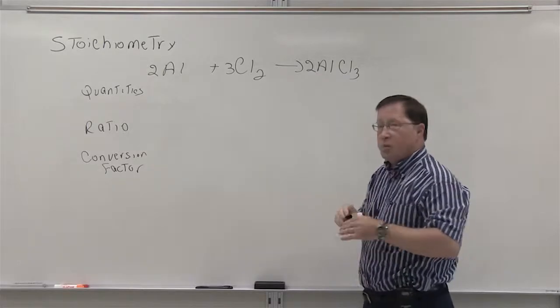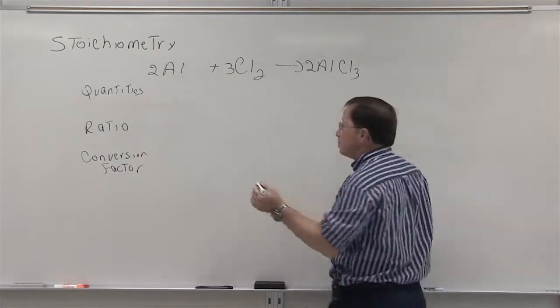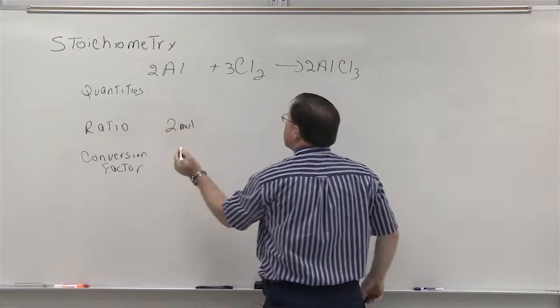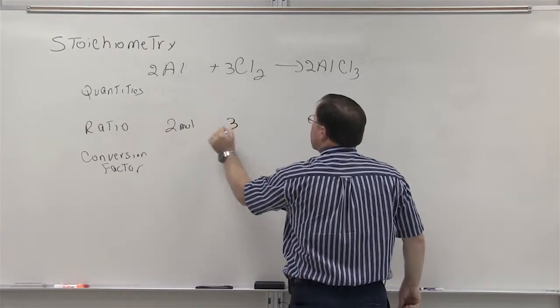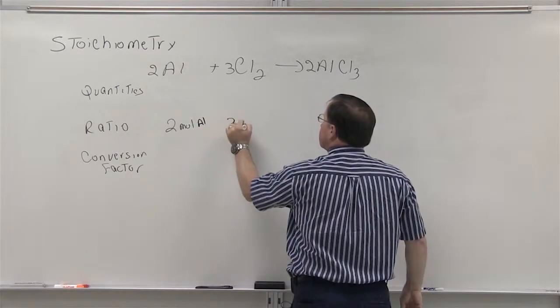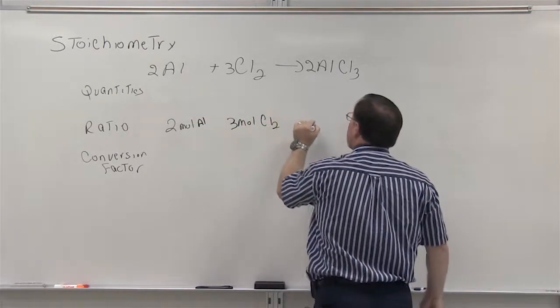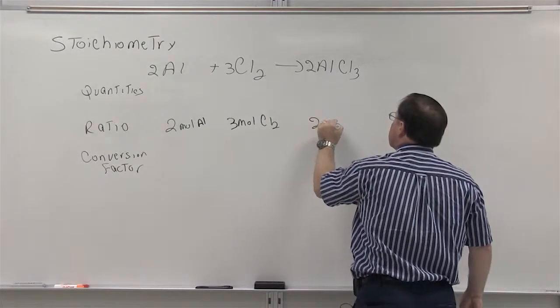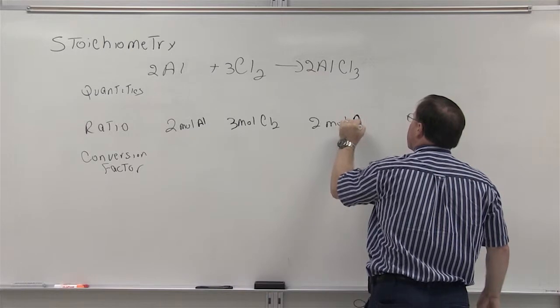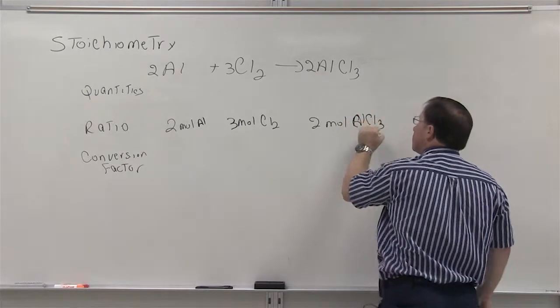These coefficients become what we call a ratio. There's two moles of aluminum, three moles of chlorine, and two moles of aluminum chloride.